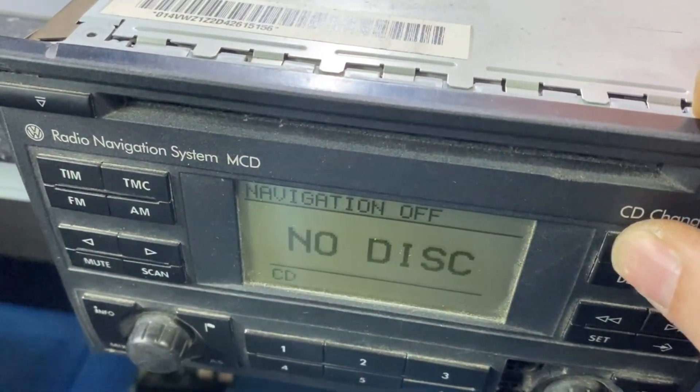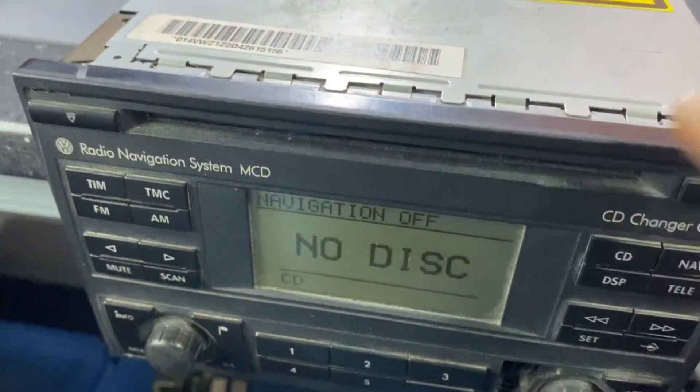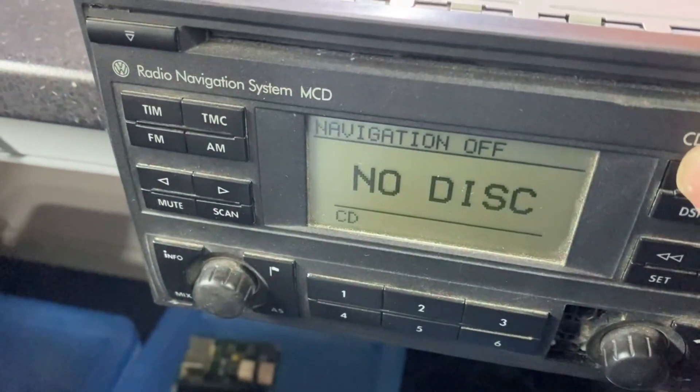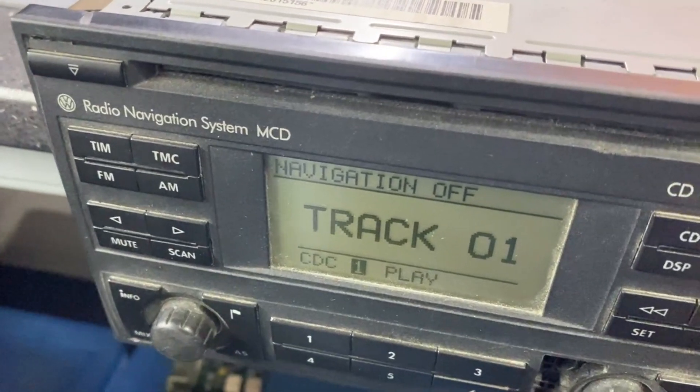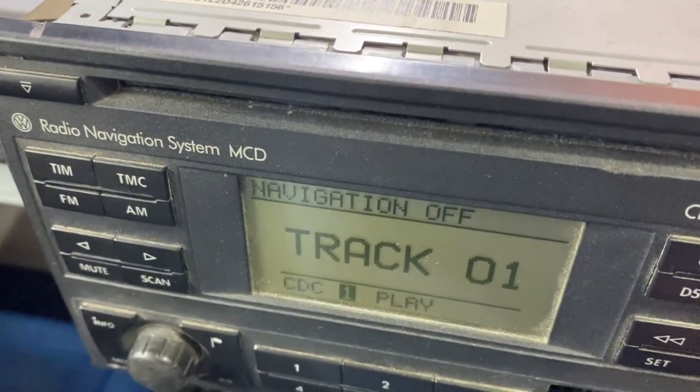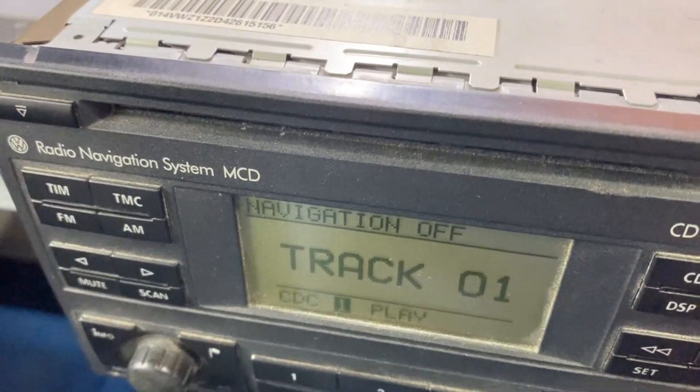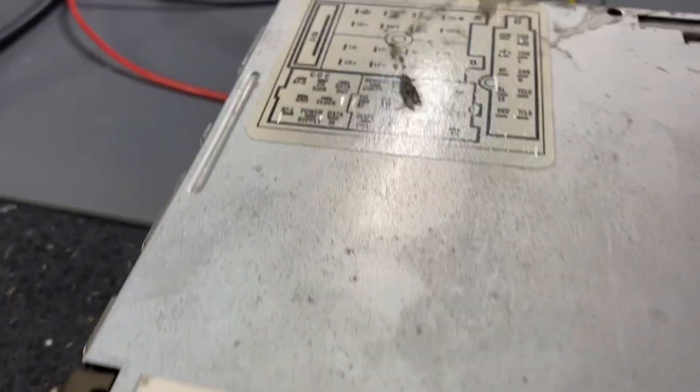So on the CD, if you put on the CD, you have no disk. If you go on CD changer, it will automatically detect track one and you can play music from Bluetooth.